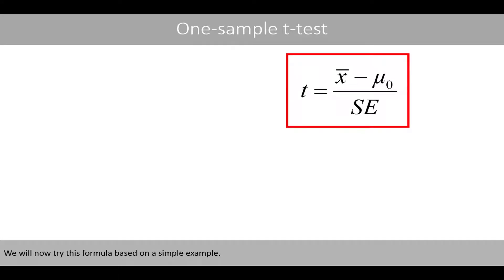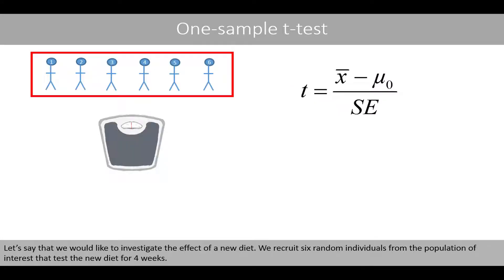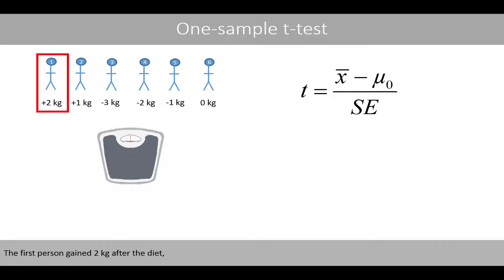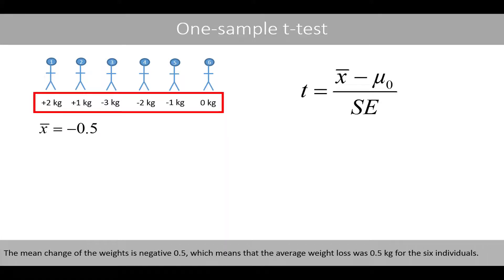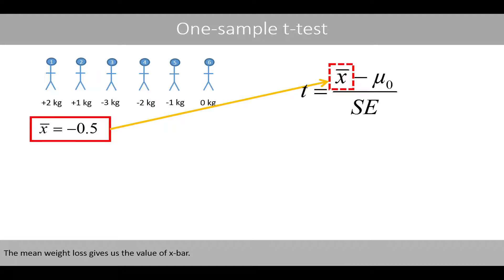We'll now try this formula based on a simple example. Let's say that we would like to investigate the effect of a new diet. We recruit six random individuals from the population of interest that test the new diet for four weeks. The first person gained two kilos after the diet, and the second person gained one kilo, whereas the third person lost three kilos, and so forth. The mean change of the weights is negative 0.5, which means that the average weight loss was 0.5 kilos for the six individuals. The mean weight loss gives us the value of x-bar.